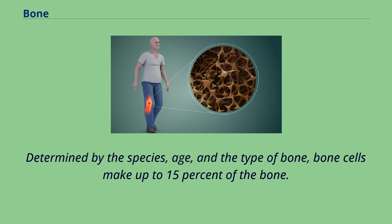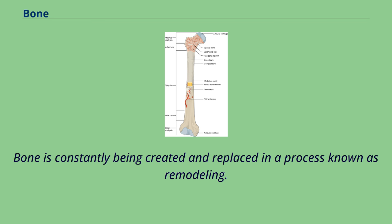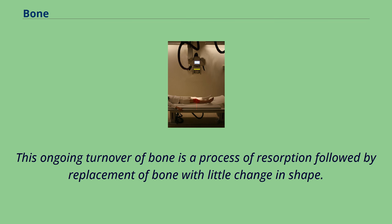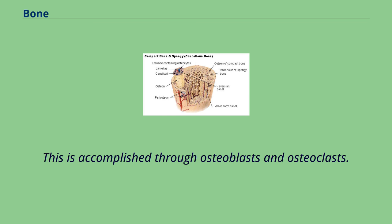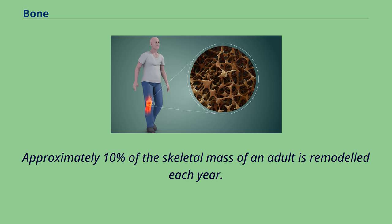Determined by the species, age, and the type of bone, bone cells make up to 15% of the bone. Mineralized bone matrix stores important growth factors such as insulin-like growth factors, transforming growth factor, and bone morphogenetic proteins. Bone is constantly being created and replaced in a process known as remodeling. This ongoing turnover of bone is a process of resorption followed by replacement of bone with little change in shape, accomplished through osteoblasts and osteoclasts. Approximately 10% of the skeletal mass of an adult is remodeled each year.